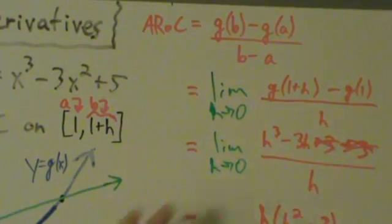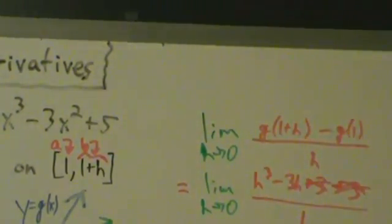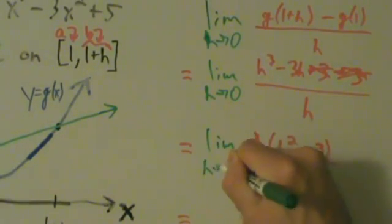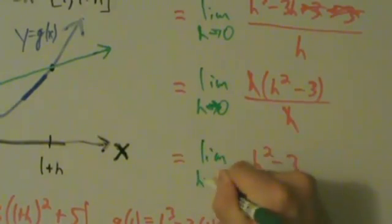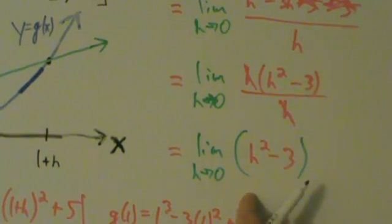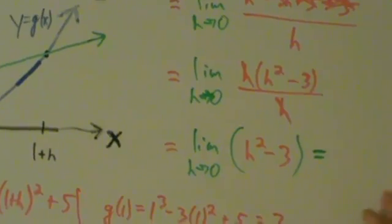Also, because we're putting a limit in here, technically this is not an average rate of change anymore. So once we push this through the limit process, something else is going to happen. We take the limit as h goes to 0 of this expression. Now, once we've simplified it as much as we can down to h squared minus 3, we can do direct substitution: 0 squared minus 3 equals negative 3.